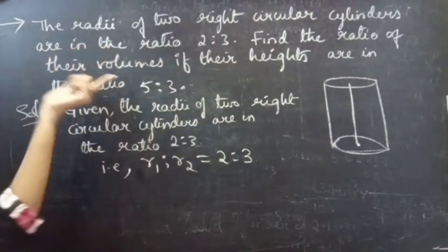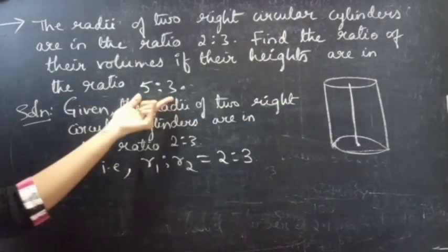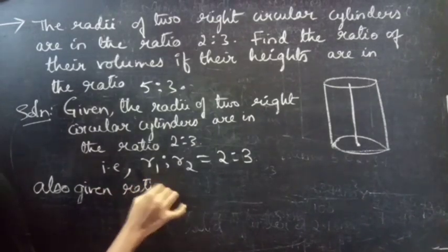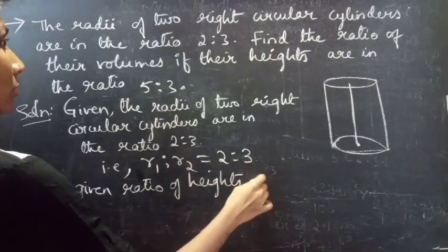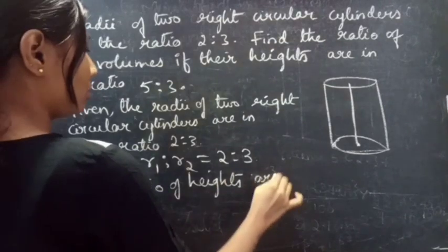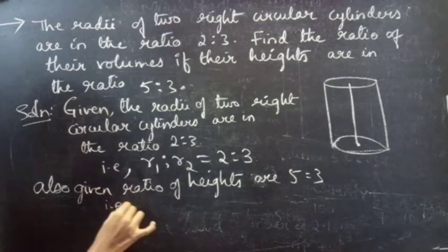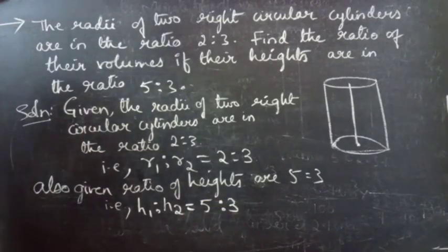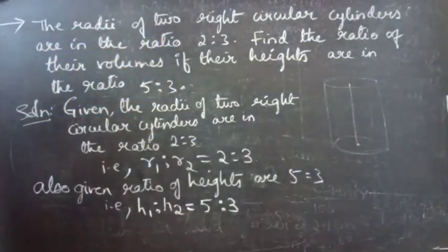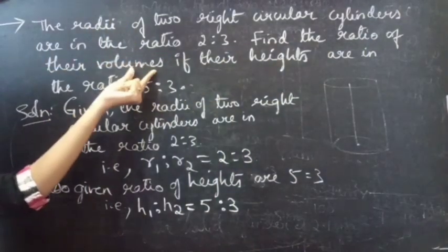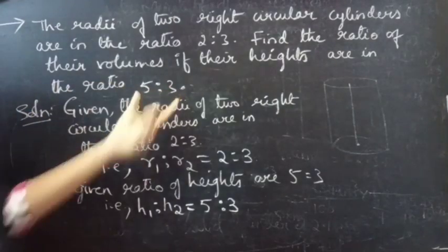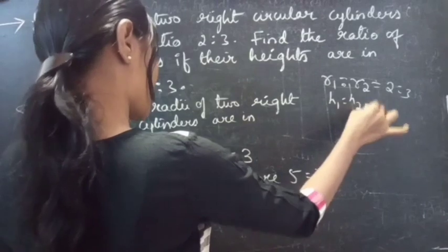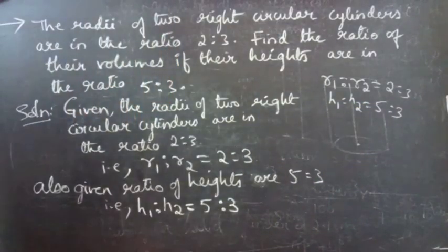We are also given the heights in the ratio 5 is to 3. That is H1 is to H2 equals to 5 is to 3. We are asked to find the ratio of their volumes given that their heights are in the ratio 5 is to 3.